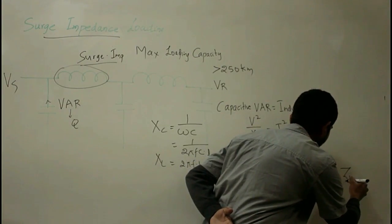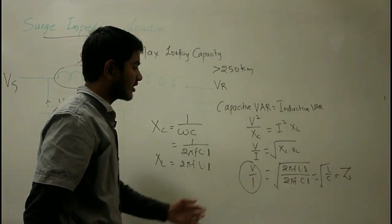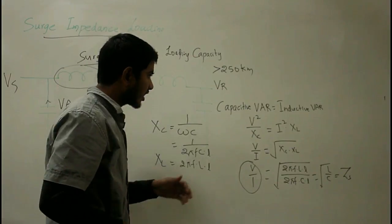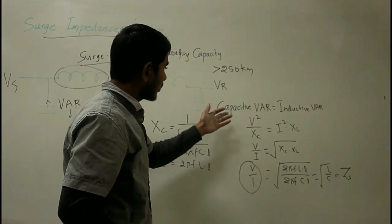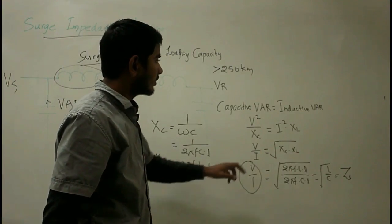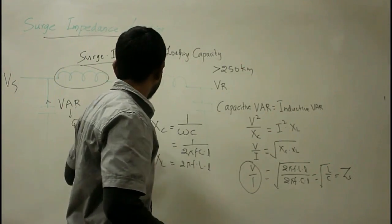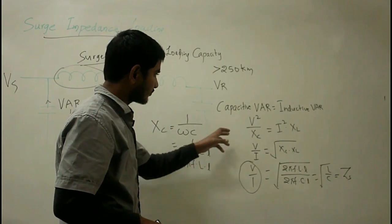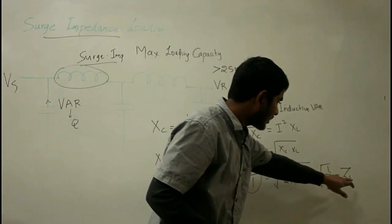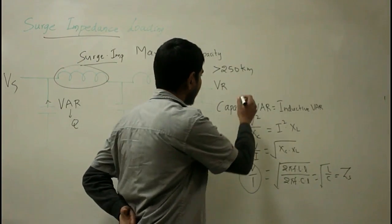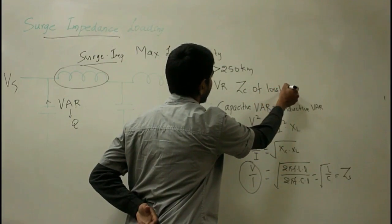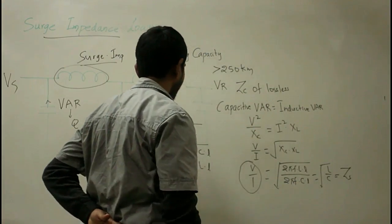When a purely resistive load is connected at the receiving end of the line equal to the surge impedance ZS, the capacitive VAR generated by the capacitor equals the reactive power consumed by the inductive component of the transmission line, making the line a lossless line. Therefore, surge impedance is nothing but the characteristic impedance of a lossless line.